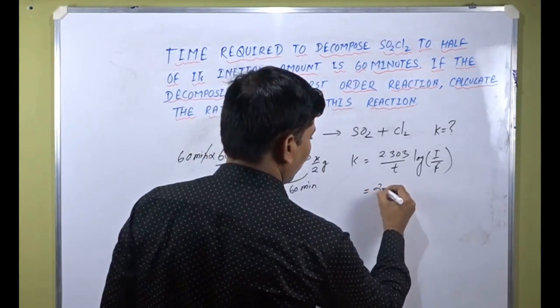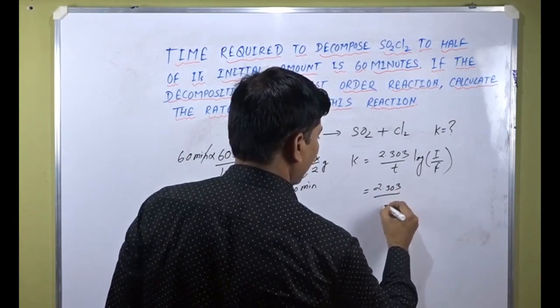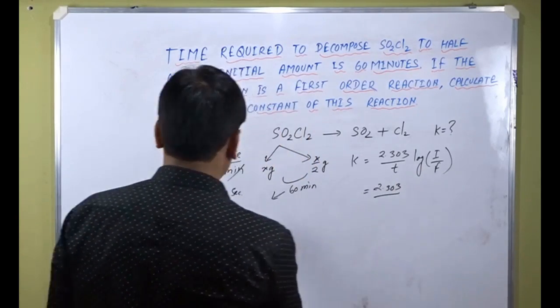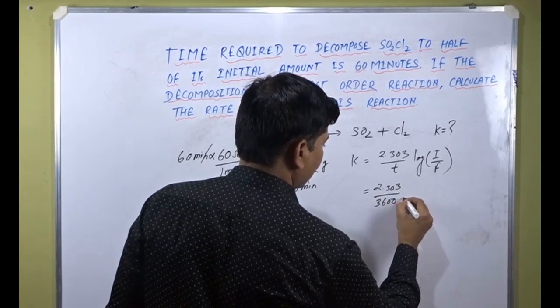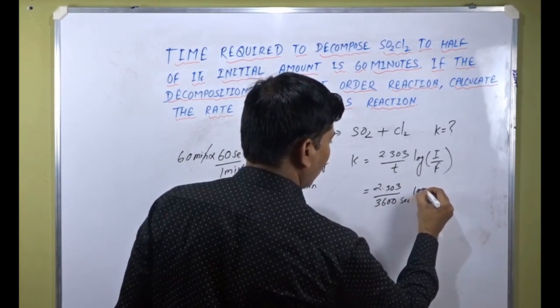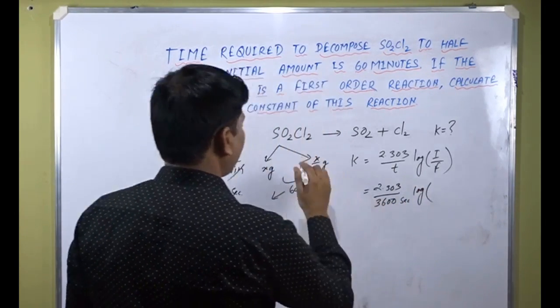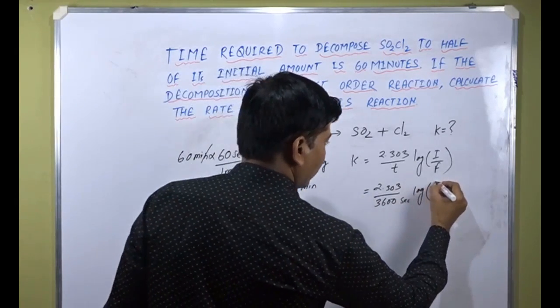Here we have 2.303 over time which is 3600 seconds, then log of initial amount which we had supposed as X grams.